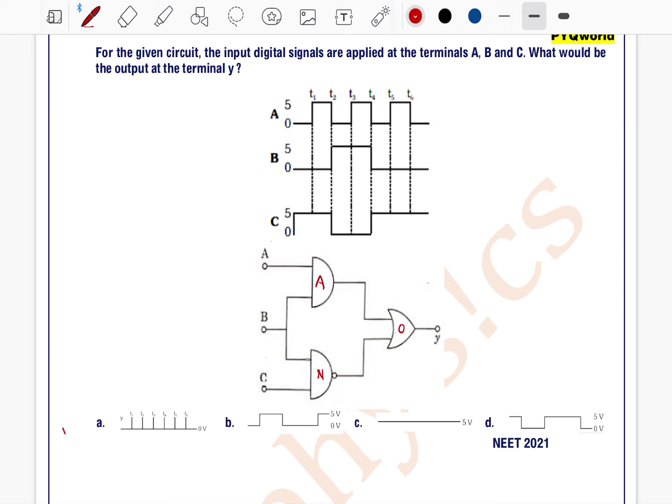See this is AND gate, this is NAND gate and this is OR gate. Input of AND gate is A and B so output will be A and B. Input of NAND gate is B and C and output will be B and C bar. And output of OR gate will be Y is equal to A and B or B and C whole bar.